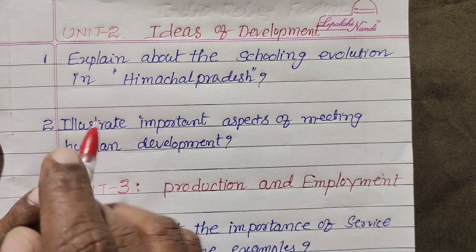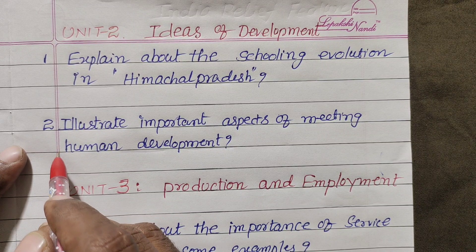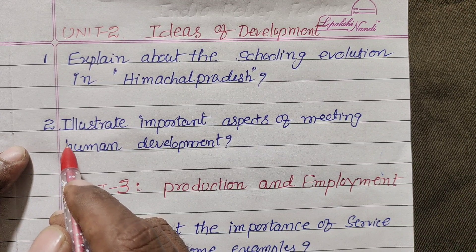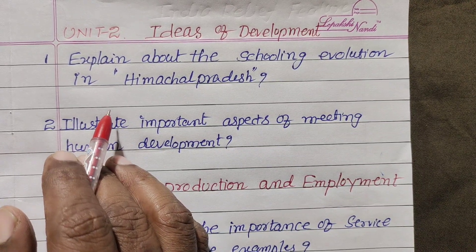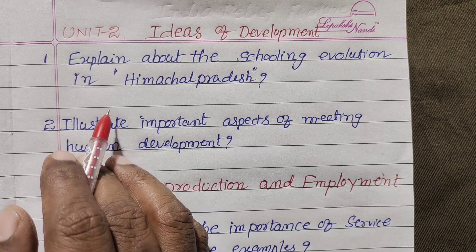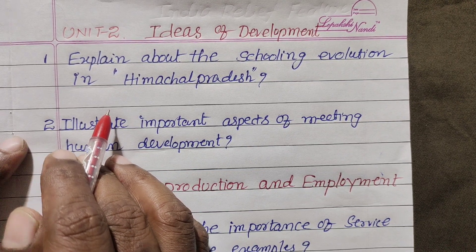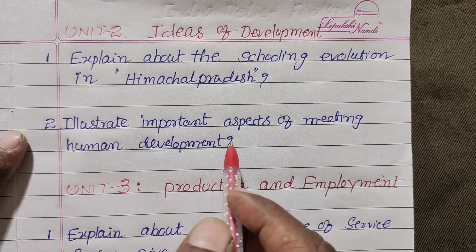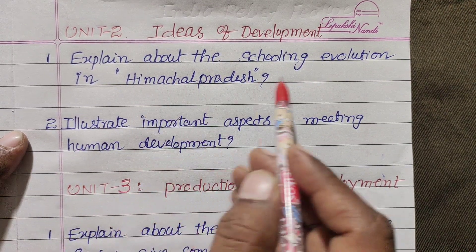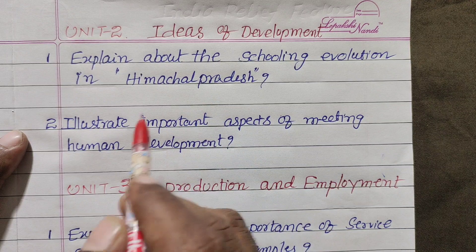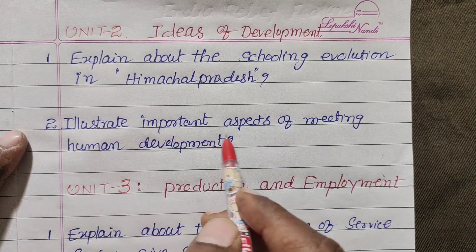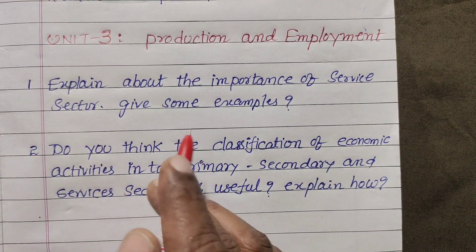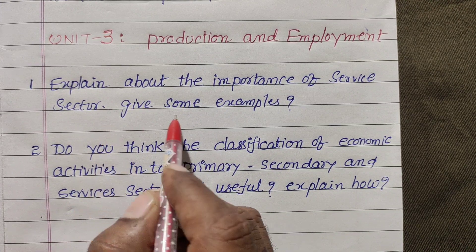You will explain the 2-mark questions. For the first 2-mark questions, we need to earn maximum marks. We need to earn 2 marks each. Explain about the scoring evaluation in Himachal Pradesh. Illustrate important aspects of human development. Another question: explain about the importance of the service sector in production and employment. Give some examples.